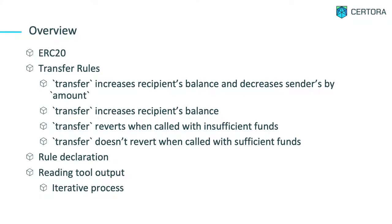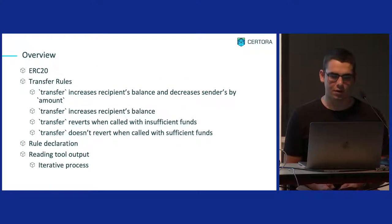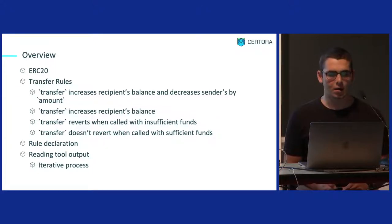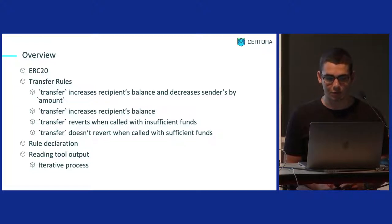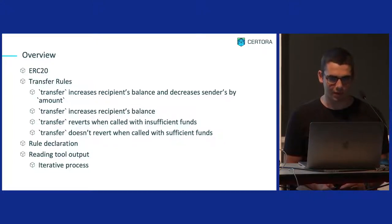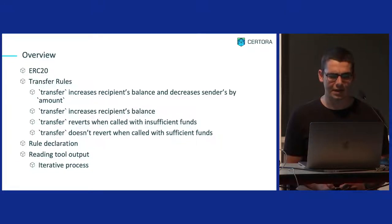I'm going to give you an overview of what I'll talk about. We'll go over the ERC-20 contract and some rules about the transfer function — basic rules such as: transfer increases the recipient's balance and decreases the sender's balance by the amount; it reverts when called with insufficient funds; and it doesn't revert when called with sufficient funds. Getting these to work is a process and it teaches you how to use the tool. We'll go into rule declaration, reading the output, and figuring out what's wrong when something needs fixing.